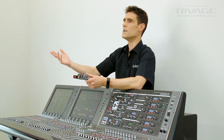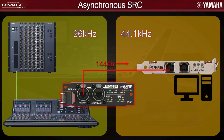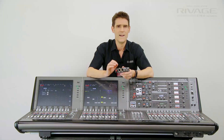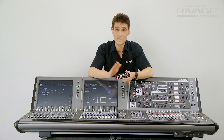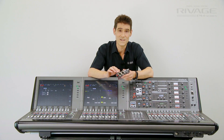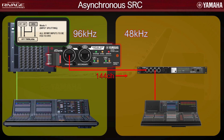Or you might want 144 channels out to make a 44.1kHz live recording, saving hard disk space while mixing at 96kHz. Another possibility in this mode is to split from the RPIO622 unit on stage to a CL5 console used for monitor mixing.